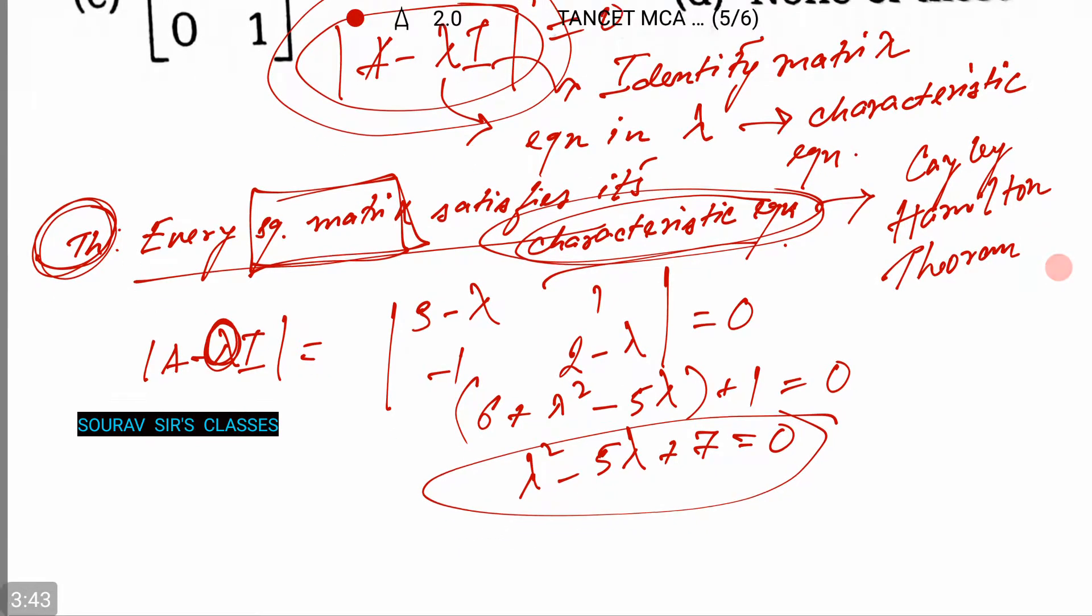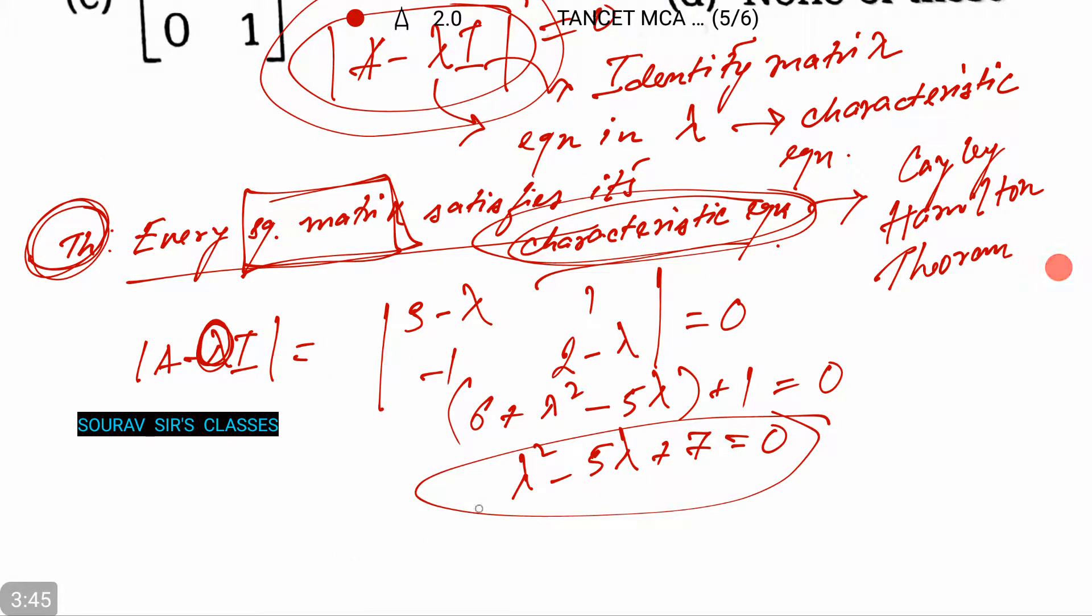So if you just put the value of λ as A, so A² minus 5A plus 7I equals to 0. So this 0 is a null matrix.